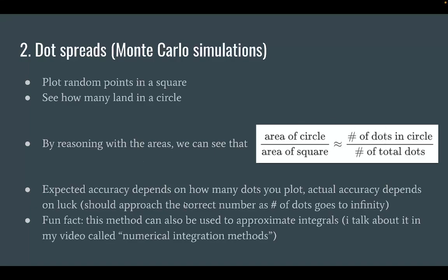The expected accuracy depends on how many dots you plot, because the more dots you plot, the closer it's going to be to being equal to the actual ratio of the area of the circle over the area of the square. And your actual accuracy depends on luck, since you're plotting a bunch of random points. So you can't actually control where they land. And you're hoping that the average of all of them, since you're plotting so many, will approach the correct number. And a fun fact about this method is that it can actually be used to approximate definite integrals. And I talk about this in my video called Numerical Integration Methods.